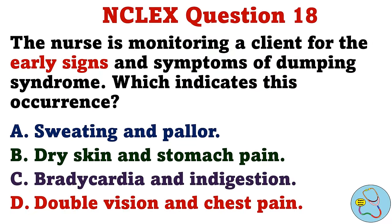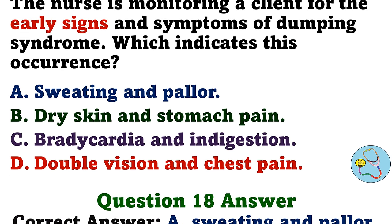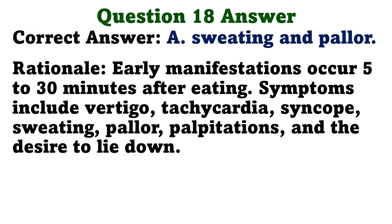The nurse is monitoring a client for the early signs and symptoms of dumping syndrome. Which indicates this occurrence? A. Sweating and pallor. B. Dry skin and stomach pain. C. Bradycardia and indigestion. D. Double vision and chest pain. The correct answer is A: sweating and pallor. Early manifestations occur 5 to 30 minutes after eating. Symptoms include vertigo, tachycardia, syncope, sweating, pallor, palpitations, and the desire to lie down.